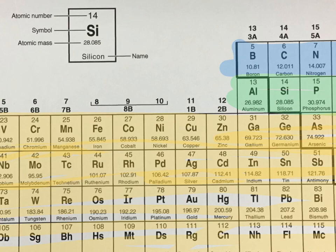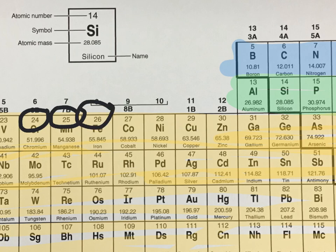The periodic table is arranged by increasing atomic number. Let's look at number 24 chromium, then we have 25 manganese, 26 iron, 27 cobalt. Each element is going to have one more proton than the element before it, so the atomic number is going to increase from left to right by 1.